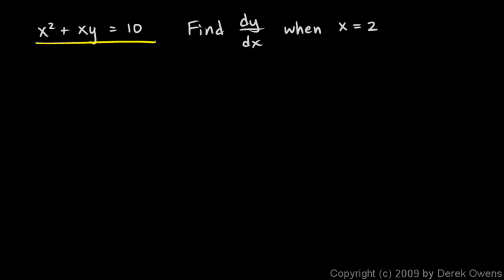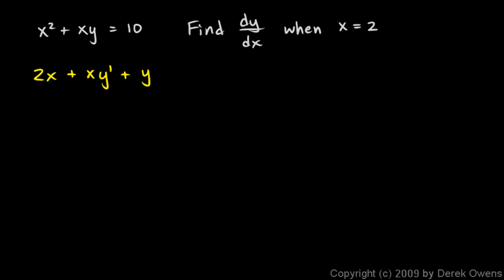Let's differentiate by taking the derivative with respect to x of each side, term by term. The first term is easy — the derivative with respect to x is just 2x. The derivative of xy is a product, so it's the first times the derivative of the second plus the second times the derivative of the first. And the derivative of 10 is just 0.